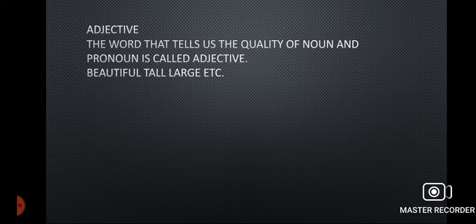Then we have Adjective. The word that tells us the quality of a noun or pronoun is called adjective — ایسے الفاظ جو ہمیں noun یا pronoun کی quality کے بارے میں بتاتے ہیں۔ For example: beautiful, tall, large. We say 'This is a tall tree' — tall is telling about noun 'tree', so it is adjective. 'This is a beautiful painting' — beautiful is adjective. 'He is an intelligent boy' — intelligent is telling about pronoun 'he', so it qualifies noun and pronoun.